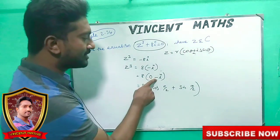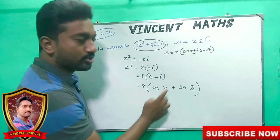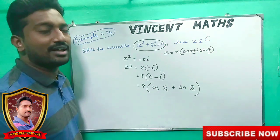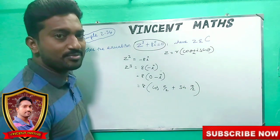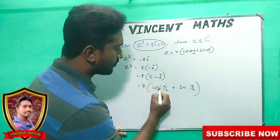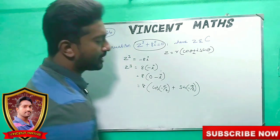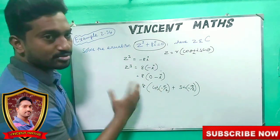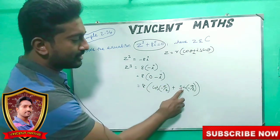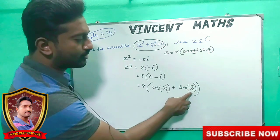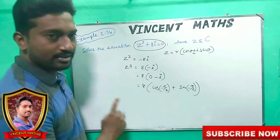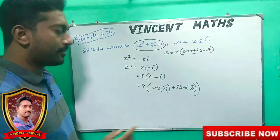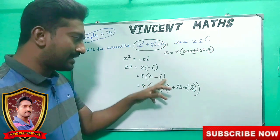Since the value is minus, we use cos(−π/2) and sin(−π/2). Cos(−π/2) = 0, and sin is minus. So we get 0 minus i, which confirms our value.